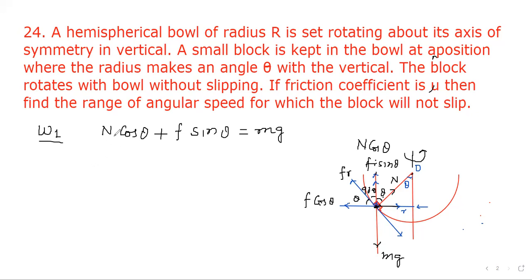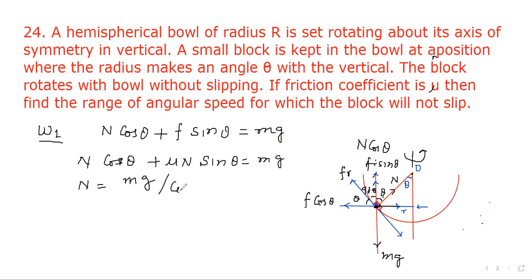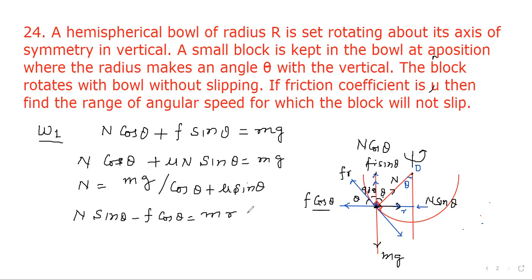Friction is μN, so N cos θ + μN sin θ = mg, from which N = mg / (cos θ + μ sin θ). In the horizontal direction, N sin θ acts outward and f cos θ acts inward, so the net centripetal force gives N sin θ − friction cos θ = mRω².